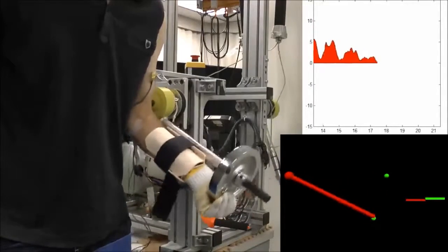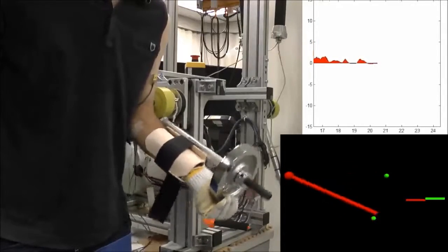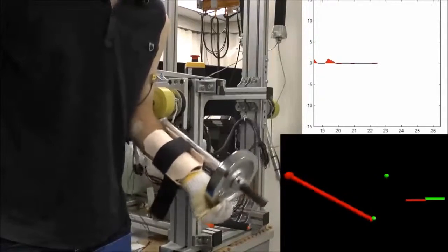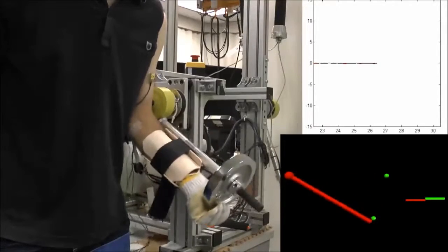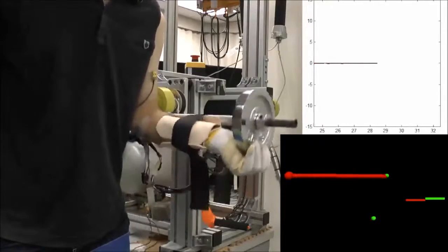In the first scenario, we examined a situation where an able-bodied subject is using an elbow exoskeleton. At the beginning of the first stage, the subject himself had to perform the desired motion.